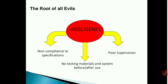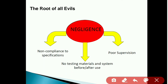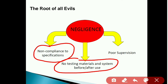The root of all evils affecting quality: the main causes are negligence and non-compliance with specifications. Whatever specifications are given in the contract document, if they are not complied with, quality is hampered. Other root causes include no testing of materials and systems before or after use, and poor supervision — which is a main reason for quality failure on site.